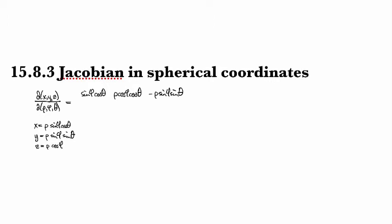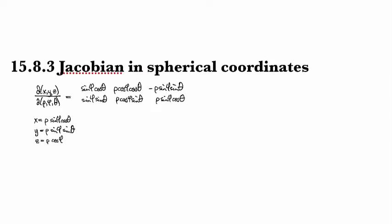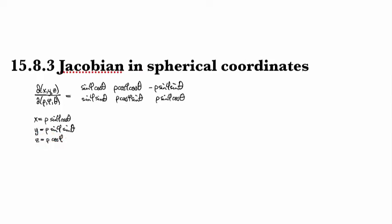Moving on to y, we have across the second row: sin(φ)sin(θ), then ρ cos(φ)sin(θ) — sorry, lost track for a second there — and then ρ sin(φ)cos(θ). And then for the last row, we take z and go across the third row and we've got cos(φ), then −ρ sin(φ), and then zero since there's no θ in this one.